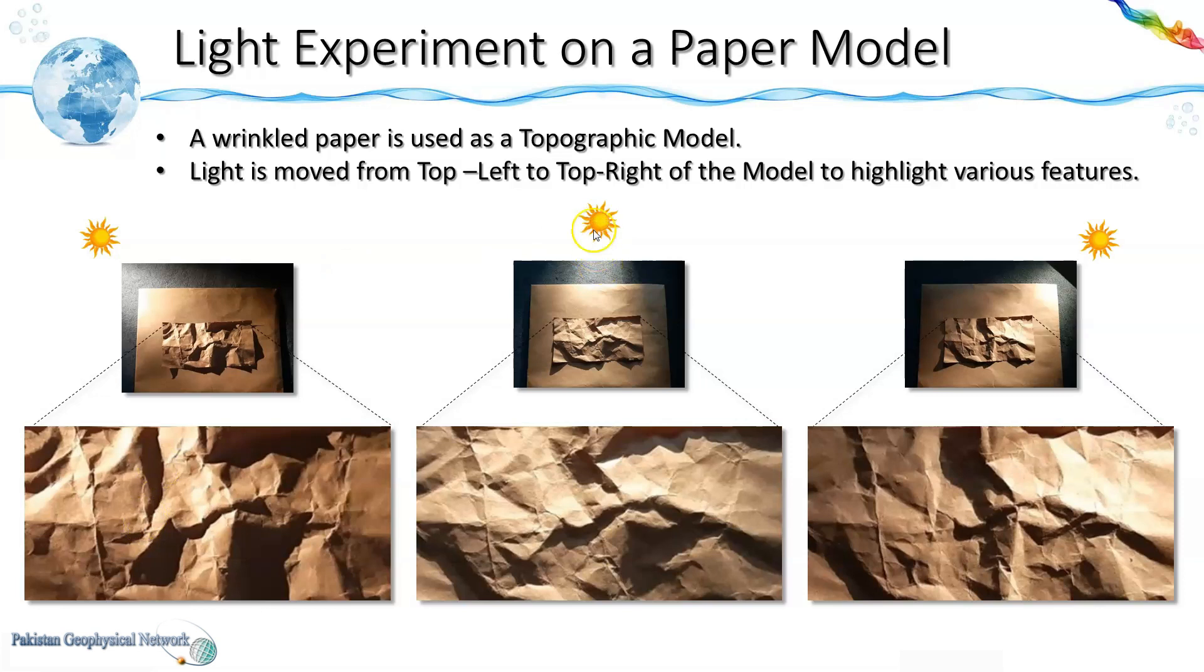If the light source is directly at the top of the structure then we would have this type of imagery and if the light source is at the top right then we would have these features highlighted.